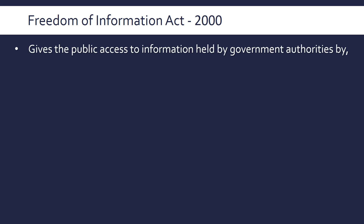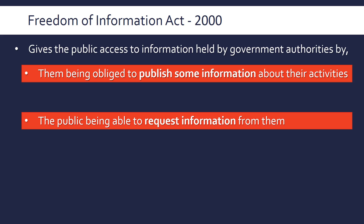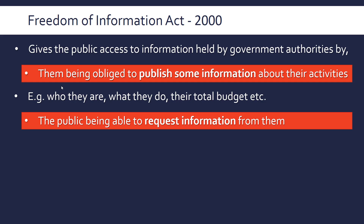The Freedom of Information Act, introduced in 2000 but implemented in 2005, is an act which gives the public access to information held by government authorities. First, they are obliged to publish some information about their activities — things like who they are, what they do, their total budget, and so on. So they can't be secretive government agencies; they've got to publish some information about what they do because it's in the public interest and the public is paying taxes for their budgets.